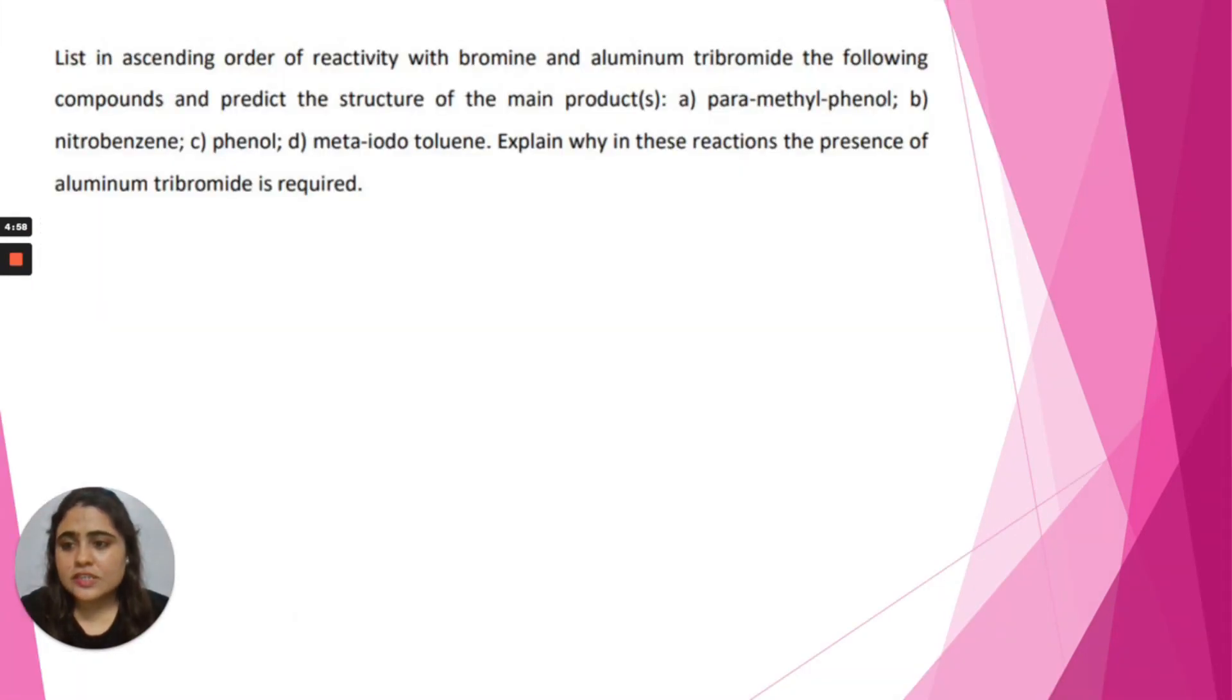Hi everyone. List in ascending order of reactivity with bromine and aluminum tribromide the following compounds and predict the structure of the main product.